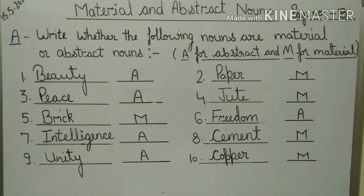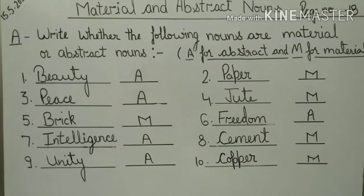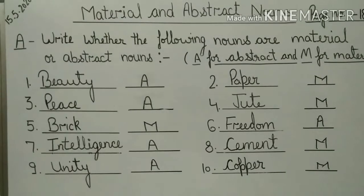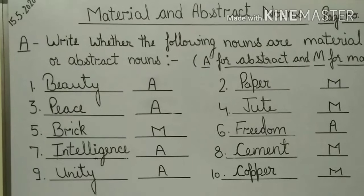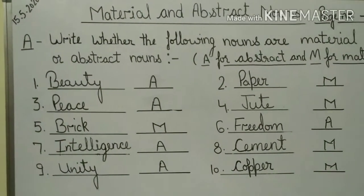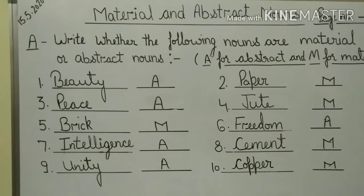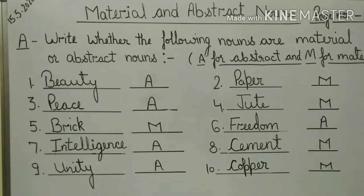First, what is material noun? Material noun, we can't make them but by which we can make things or we can use them as an ingredient. And abstract noun is a name of state, quality, feeling or idea that we can think or feel but we can't touch or see.